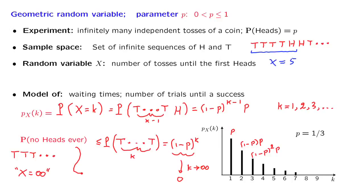The probability of not ever seeing any heads is equal to 0, so we can ignore this particular outcome. As a side consequence, the sum of the probabilities of the different possible values of k is going to be equal to 1, because we're certain that our random variable is going to take a finite value. You can use the formula for the geometric series to verify that indeed the sum of these probabilities, when added over all values of k, equals 1.